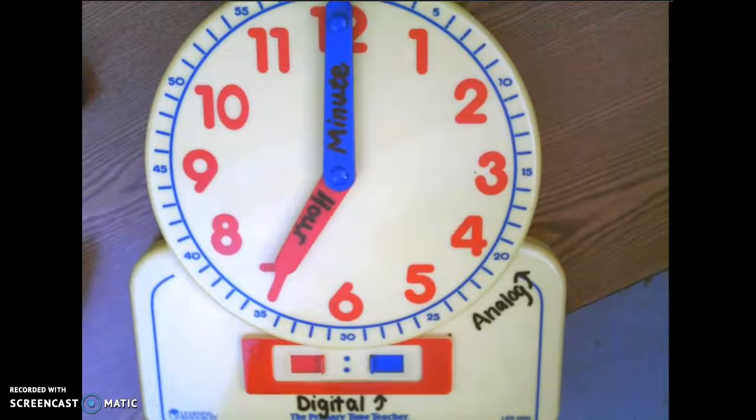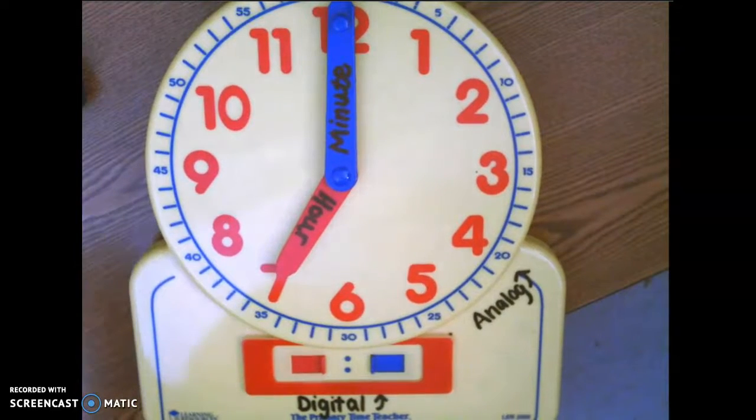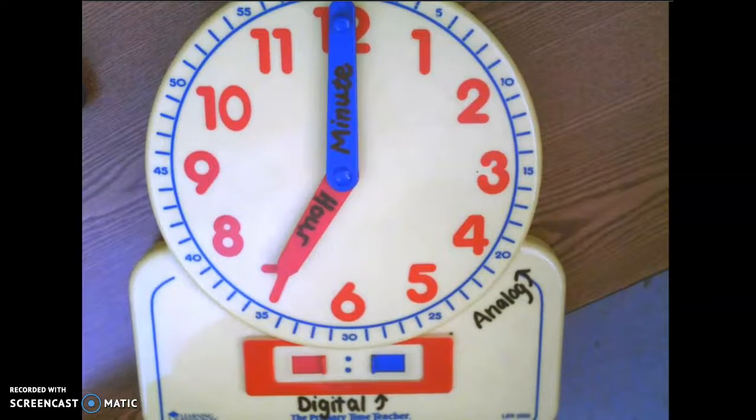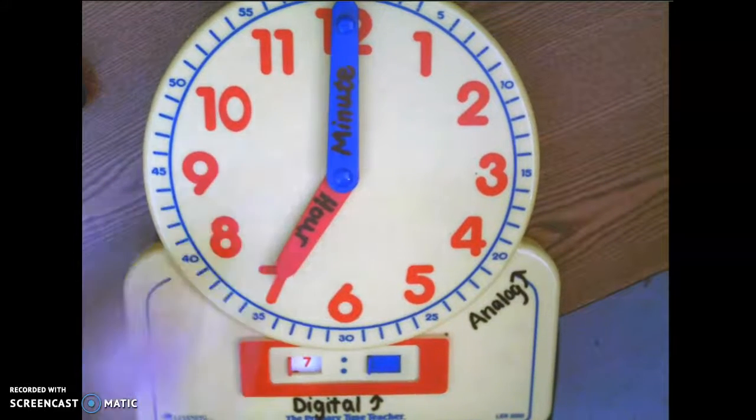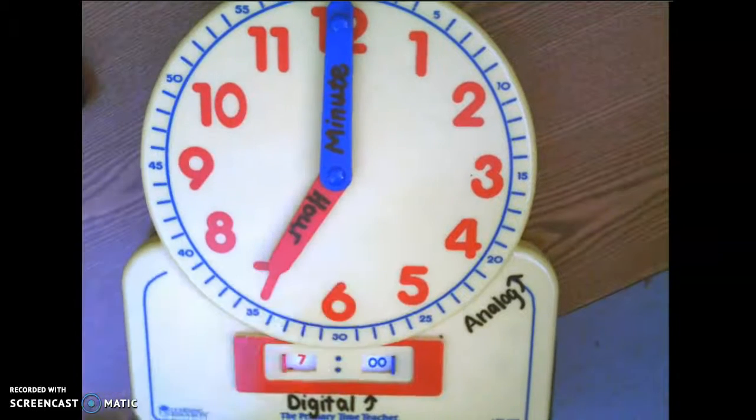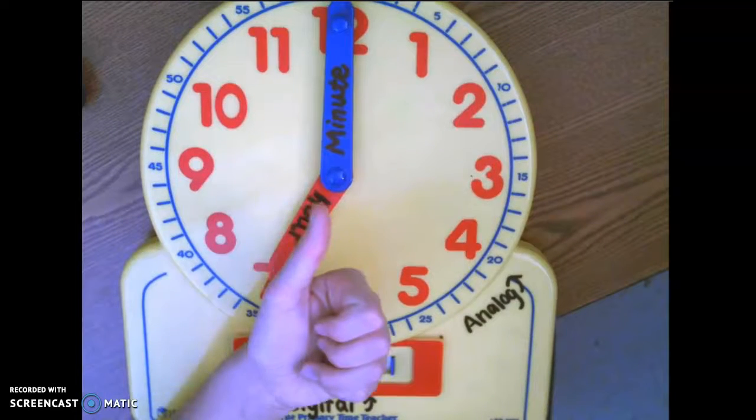What time does the analog clock say? It says seven o'clock. Give me a thumbs up if you said seven o'clock.